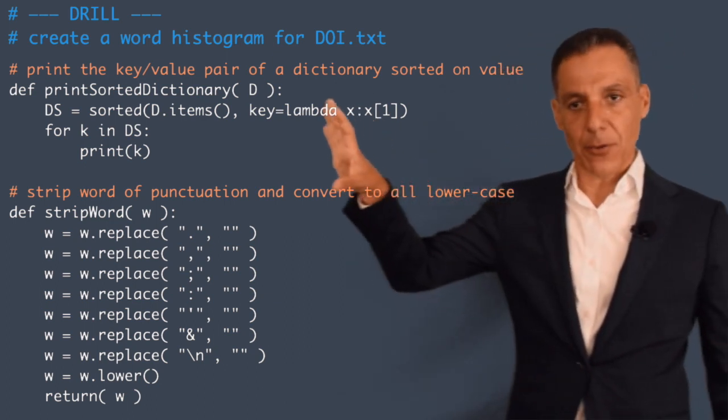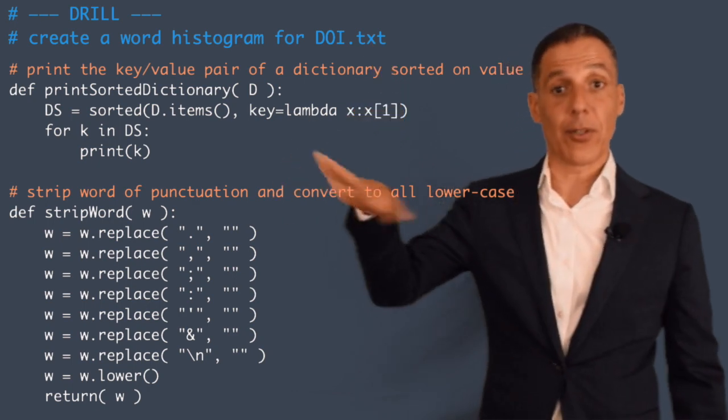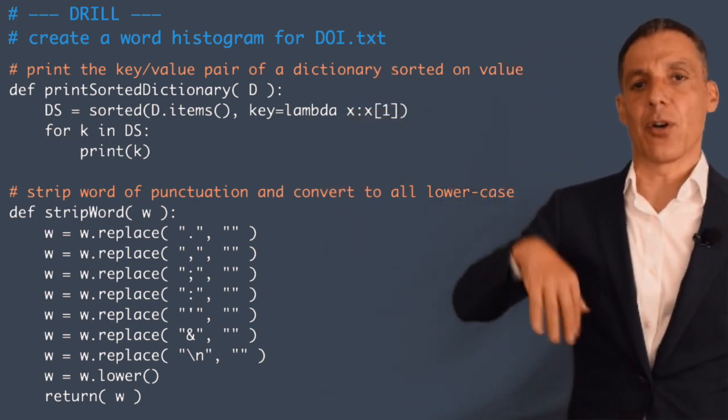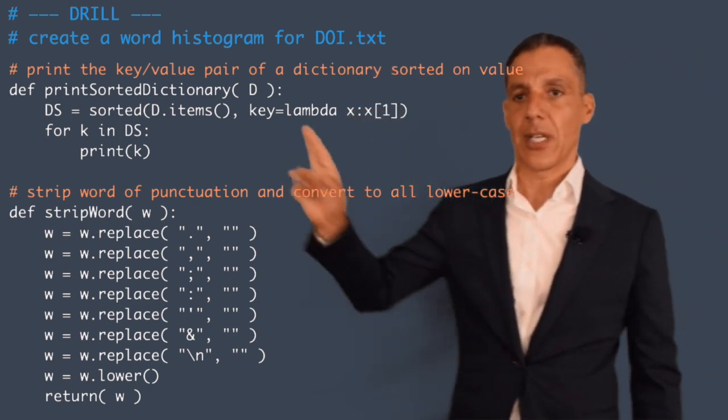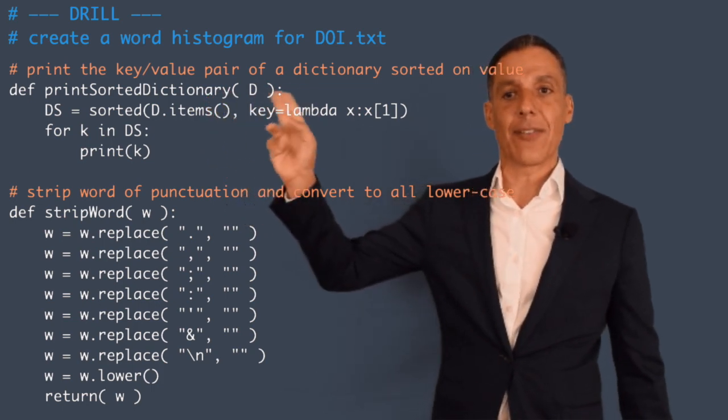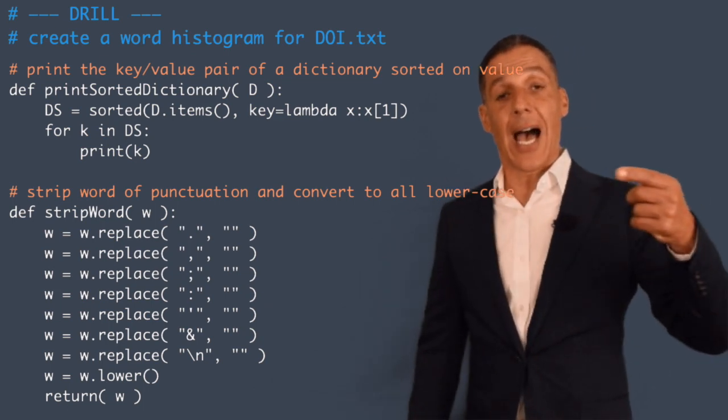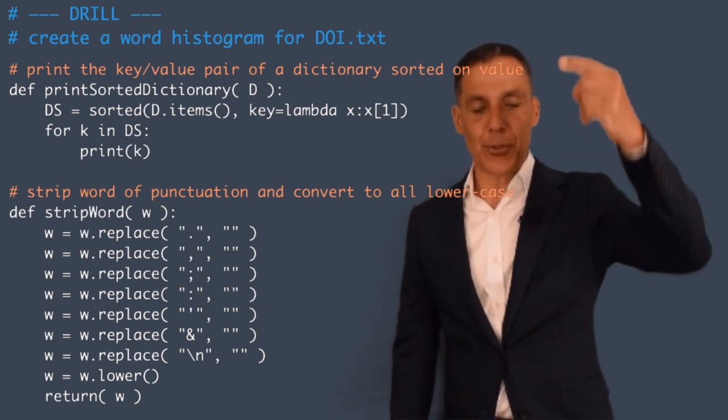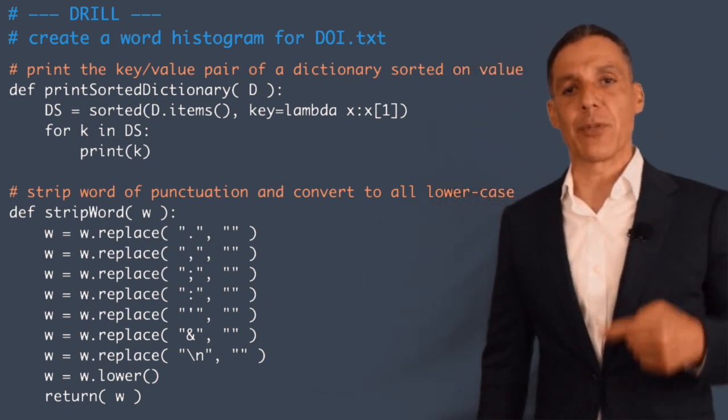So this function, and of course these two things along with doi are on the course website so you can go ahead and download those and shove them into your Jupyter notebook. This prints a dictionary in sorted order, and here I'm going to sort on the count, so it will print things in order with respect to their frequency.